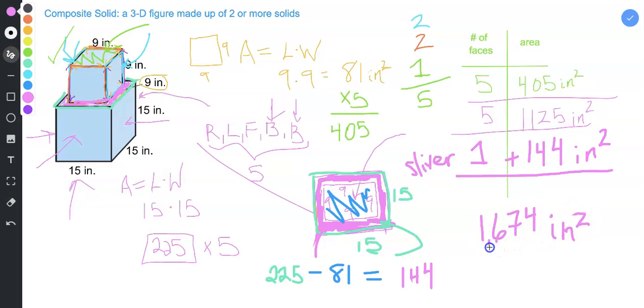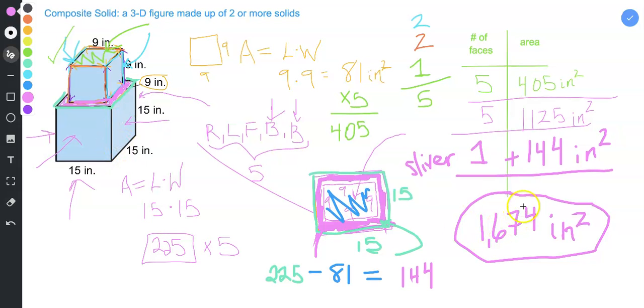And that represents the total surface area. Basically, the outside area that you would paint. So if you had a paintbrush, everything that you could paint on this figure, the total surface area here is 1,674 square inches.